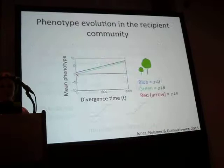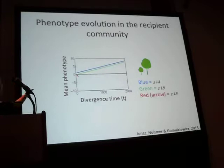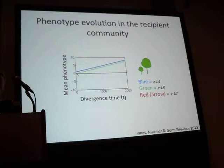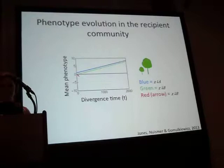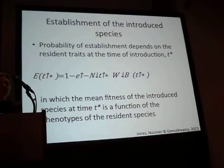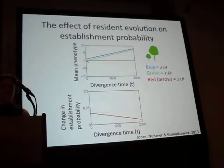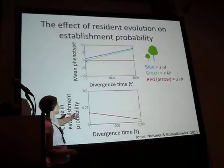This is an example of co-evolutionary dynamics in the case of competition with an arms race. The phenotypes of the two resident species — blue and green — increase over time because both species do better if they have a more extreme phenotype. When that new species is introduced, we tracked the probability that it becomes established, using a stochastic algorithm that depends on the initial population size and the fitness of the introduced species. As the arms race goes on, the introduced species has a lower and lower chance of becoming established, having fallen very far behind.